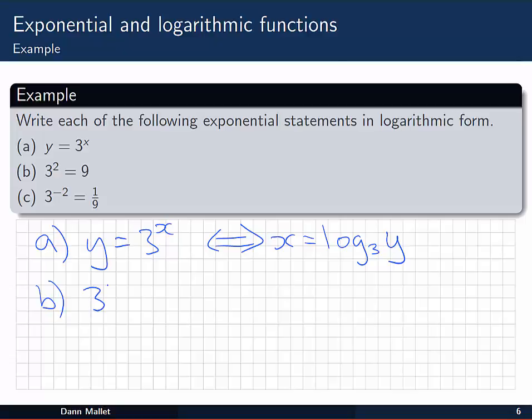The statement 3 squared equal to 9 is something we're obviously quite familiar with. 3 times 3 is 9. But we can also write this, or say this, in a logarithmic form. We can say that 2 is the base 3 logarithm of the number 9.